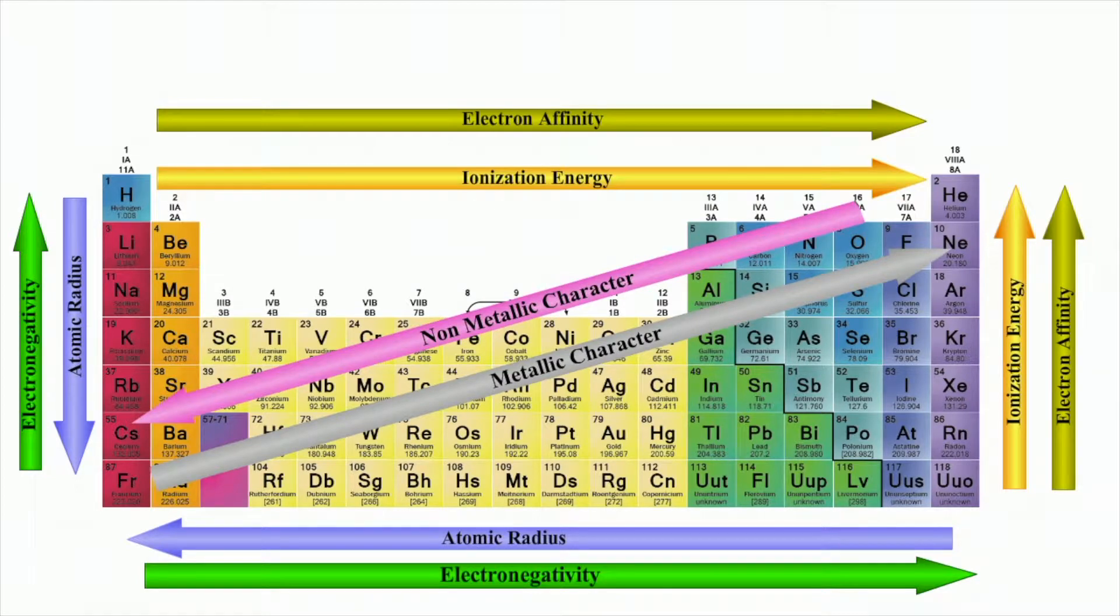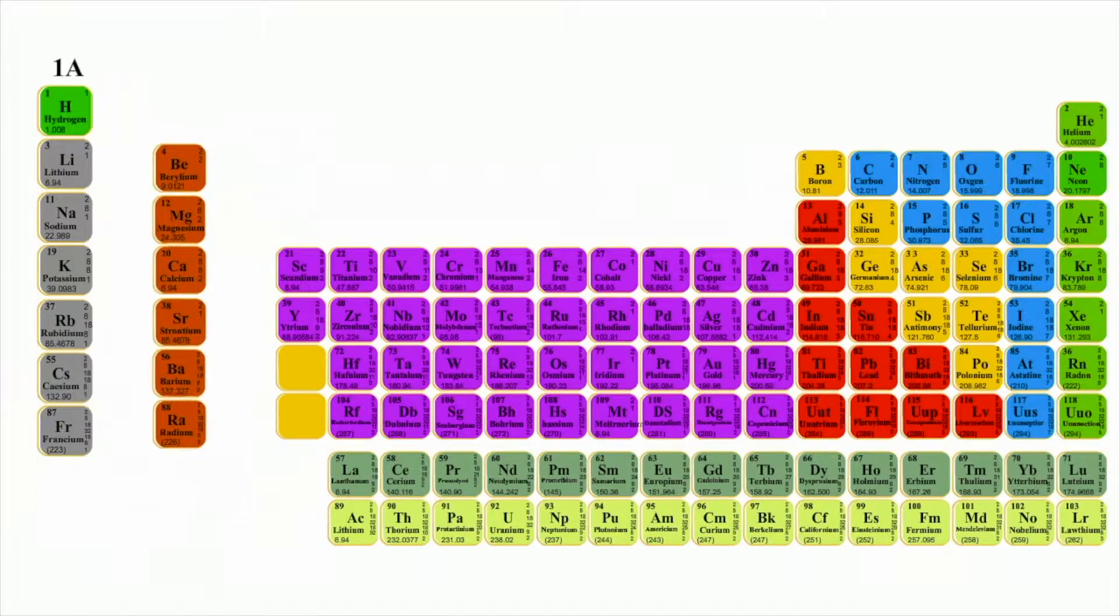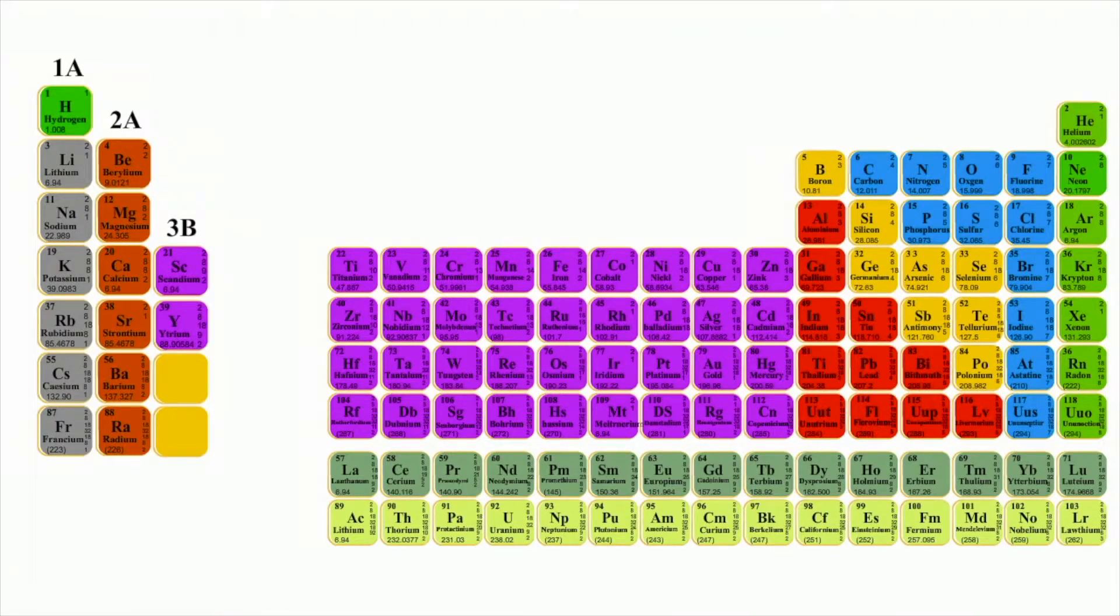These properties can be related to the non-metallic and metallic characteristics of the elements in the table. The columns of elements on the periodic table define elemental groups.